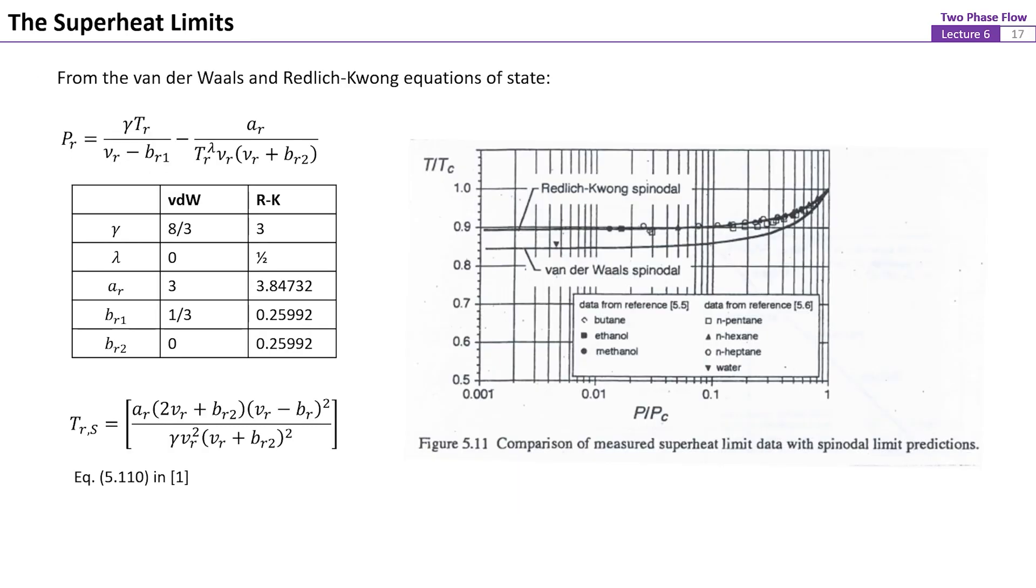From the reduced forms of the Van der Waals and Redlich-Kwong equations of state, and the discussion of the theoretical solution for superheat limit, a relation for the spinodal limits can be derived as shown by equation 5.110 in the reference book. Figure 5.11 shows a comparison of the theoretical spinodal limits by using Van der Waals and Redlich-Kwong relations versus experimental data for some fluids. It shows that a liquid can generally be superheated to more than 80 percent of its critical temperature before the spinodal limit is reached. This means that to make stable evaporation of such liquid at a given pressure, the temperature has to be raised much higher than its saturation temperature.